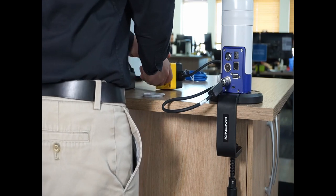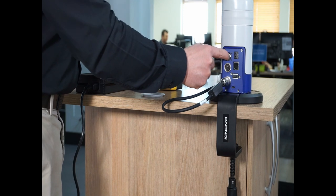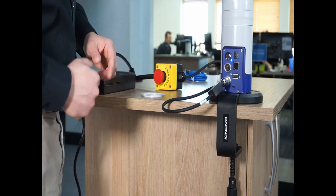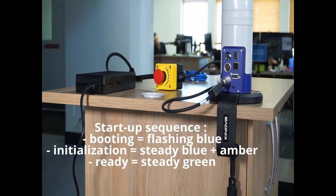Before powering on the robot, you must check that the emergency stop is turned to the right release position. Then, power on the robot by pushing the power button on the base controller. The LED will turn blue, and you will see the following startup sequence.